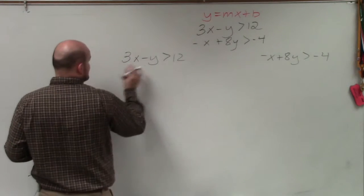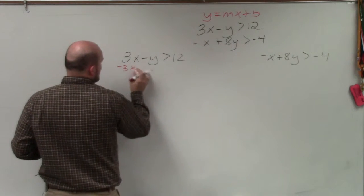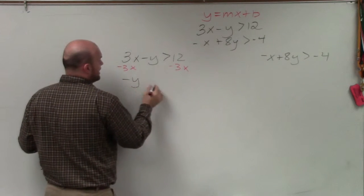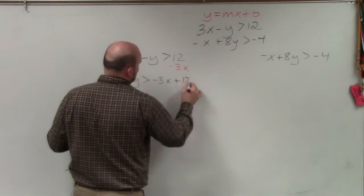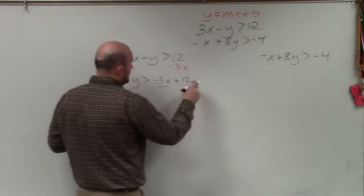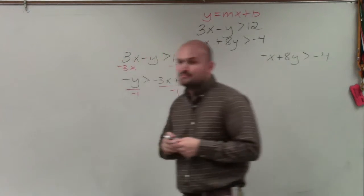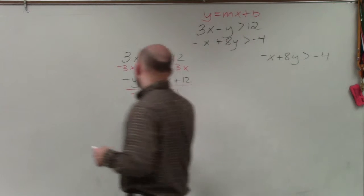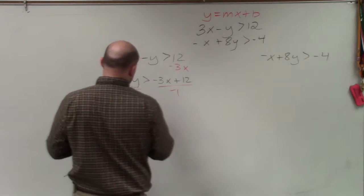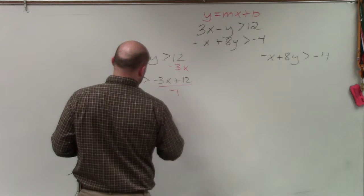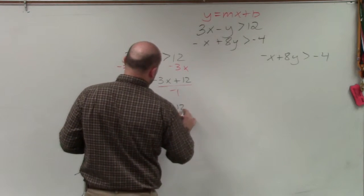So in this case, to get y by itself, I'm going to subtract 3x on both sides. I now obtain negative y is greater than negative 3x plus 12. Then to solve for positive y, I will divide by negative 1 on both sides. Since I'm dividing by a negative number, I now have to flip the sign. So my final equation is y is greater than positive 3x minus 12.